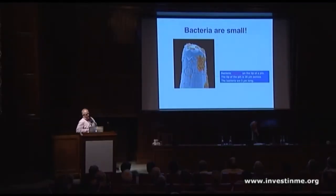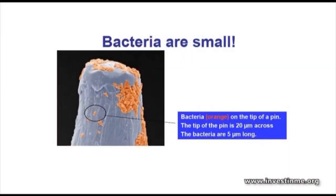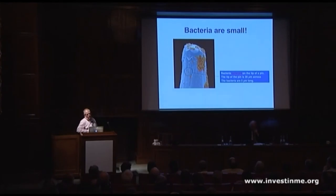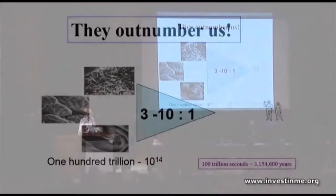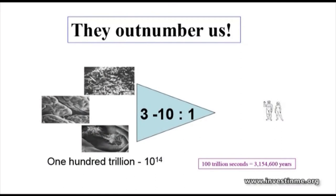To give some idea of scale: a single bacterial cell sits on the head of a pin — the tip is 20 microns across, so bacteria are about 5 microns — incredibly small. Yet they vastly outnumber us. Collectively, it's been estimated there are maybe 100 trillion microbes that reside in our GI tract. 100 trillion seconds, just to give you some idea of what that vast number is, is several million years.